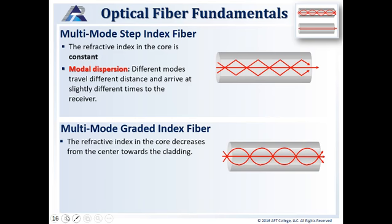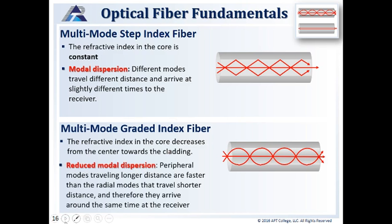In multi-mode graded-index fiber, the refractive index of the core in the center is higher than it is at the outer edge of the core. This means fundamental modes travel slower through the middle, but the higher order modes travel much faster as they go around the outside of the core. This helps reduce modal dispersion so that all the light arrives at the end of the fiber at the same time — peripheral modes traveling longer distances are faster than the radial modes traveling shorter distances, so they arrive at around the same time.